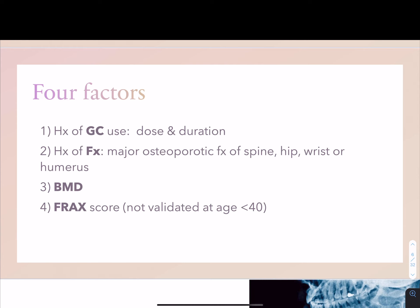First, determine the patient's history of glucocorticoid use — how much are they on currently, how much were they on previously, and for how long? If they were on medication for a long time, ask for an average annual use. Second, did they break a bone in the past, which bone was broken, and in what context? You can specifically ask about fractures in the spine, hip, wrist, or humerus.